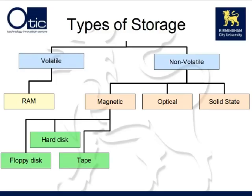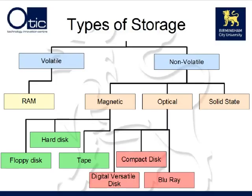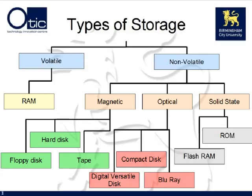Magnetic storage can be further broken down into floppy disk drives, hard disk drives, and tape backup devices. Optical storage can be further broken down into DVDs, compact disks, and Blu-ray storage devices. Finally, we can break down solid-state devices into read-only memory, or ROM, and flash RAM.